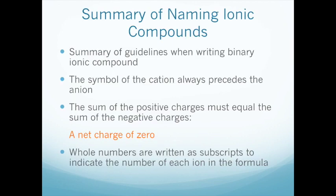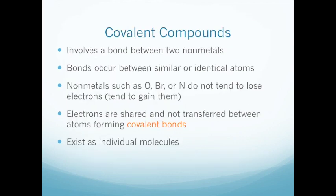In summary: always put the cation first and the anion second; the sum of positive and negative charges must always equal zero; and the subscript numbers must always be whole numbers indicating the number of each ion in the molecular formula. That is it for ionic compounds. Please tune in next week for covalent compounds, and please do the exam. I'll be posting the labs and the quiz for this chapter within the next day. Hope everybody has a good weekend and stay safe.